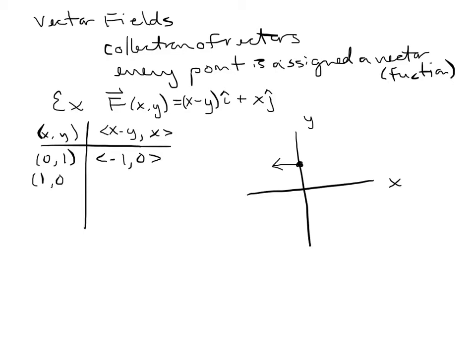Now if we go to the point (1, 0): we get 1 minus 0, that's 1, and x is 1. So from the point (1, 0), there's a vector that goes 1 in the x-direction and 1 in the y-direction. Let's do one more point — (2, 2): 2 minus 2 is 0, and x is 2. So at the point (2, 2), the vector goes 0 in the x-direction and 2 in the y-direction.